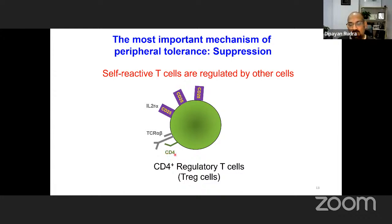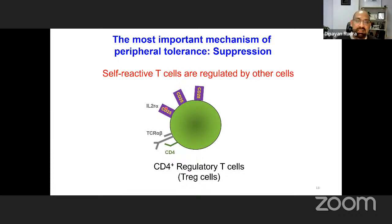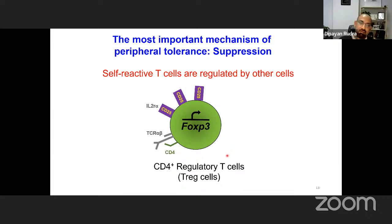Various types of immune cells can regulate self-reactive T cells, and the most important are the regulatory T cells, which I will discuss today. Regulatory T cells are a subtype of CD4-positive T cells. There are broadly two types of T cells — CD4-positive and CD8-positive, both TCR alpha-beta positive. Regulatory T cells were initially identified by expression of CD25, which is the alpha subunit of the IL-2 receptor, on their surface. Later it was found that they express the transcription factor FoxP3, which is required for their generation and function.